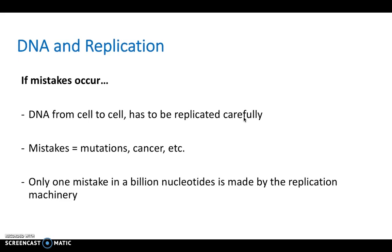And so if mistakes occur, it's important for DNA to be replicated carefully because mistakes equals mutations and possibly cancer in the offspring. So usually we have only one mistake in a billion nucleotides, but that one mistake could be fatal and it could be a cancer.